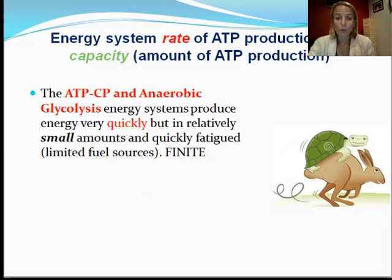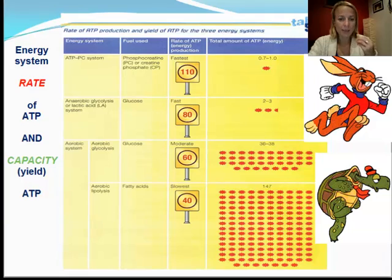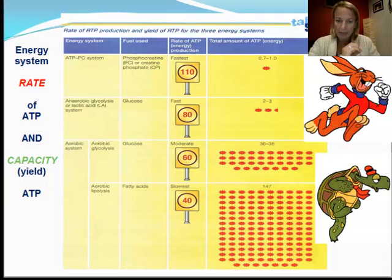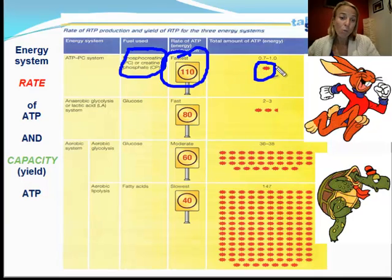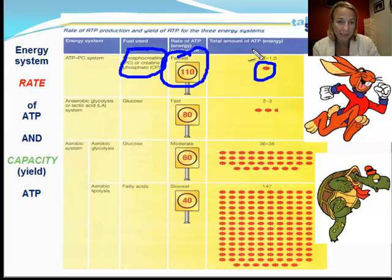Remembering back to the study design, we're looking at two things with energy systems: the rate and the capacity. The rate is very fast — it's the quickest of the three energy systems. However, the capacity is relatively small. This is the perfect diagram to help us understand the rate — how fast — and the capacity — how much energy it provides. Specifically looking at ATP-CP, the fuel it uses is PC or CP. The rate is the fastest, the most rapid. But it only gives us about one ATP for every molecule of CP. Another term for capacity is yield, and the yield is very small.